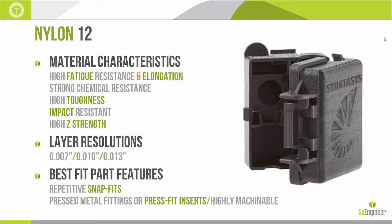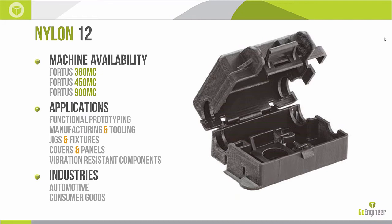Nylon 12 is available in three different resolutions: 7 thou, 10 thou, and 13 thou — the most flexible of the nylon grades in that regard. The best-fit part features are parts that have snap fits, especially repetitive snap fits like a ratcheting mechanism; parts that will have press-fit inserts that would have typically cracked ABS or PC; and parts going through post machining, since Nylon 12 is highly machinable. Machine availability is a huge concern — Nylon 12 is available on the greatest number of machines.